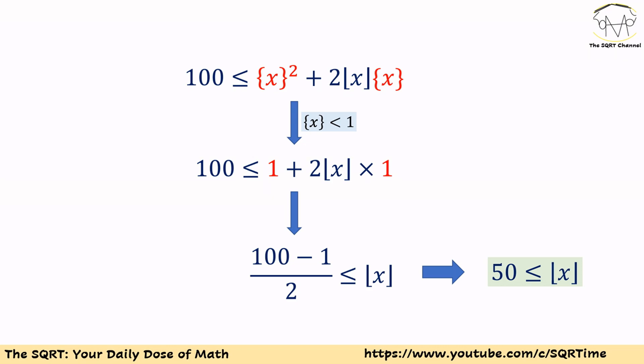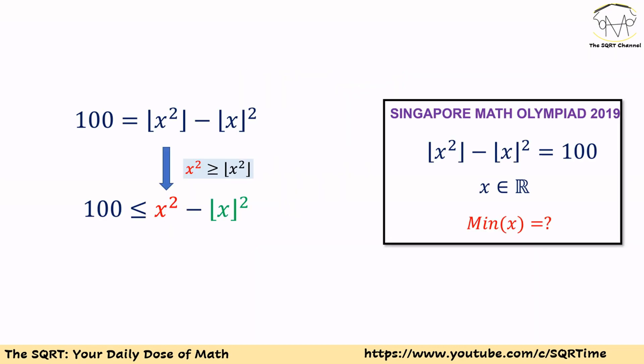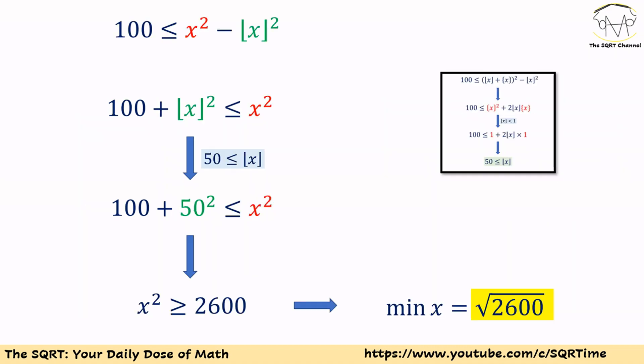Since 99/2 is not an integer, floor of x must be greater than or equal to the nearest integer, which is 50. Now let's go back and review the original equation: 100 equals floor of x squared minus floor of x squared. Since x squared is greater than or equal to floor of x squared, we can write 100 is less than or equal to x squared minus floor of x squared, which rearranges to x squared is greater than or equal to 100 plus floor of x squared. We also found that floor of x is greater than or equal to 50.